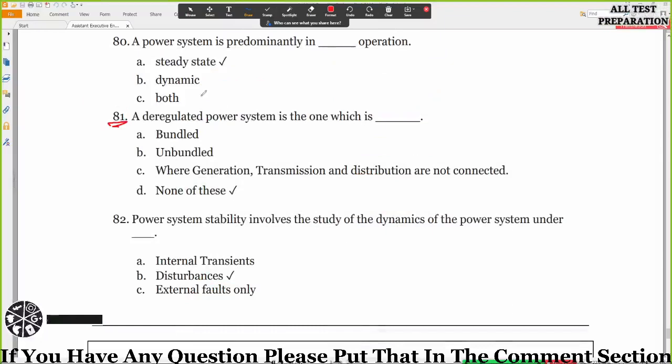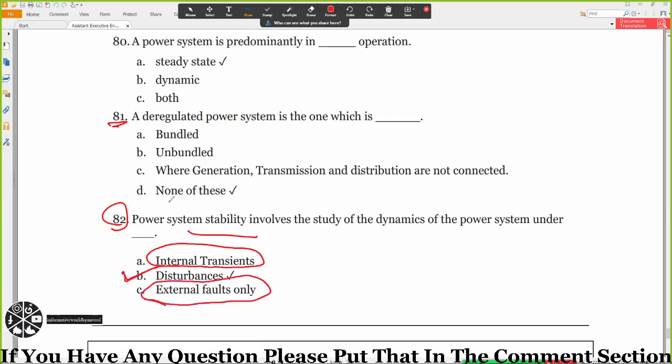Last question 83: The power system stability involves the study of the dynamics of the power system under internal transient, under disturbance, under external fault only. So under disturbance, disturbance may be internal transient or external fault. So this will be the correct option.